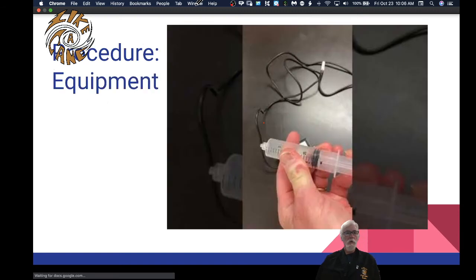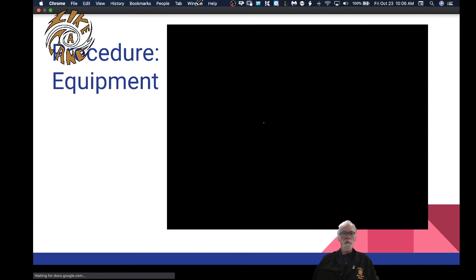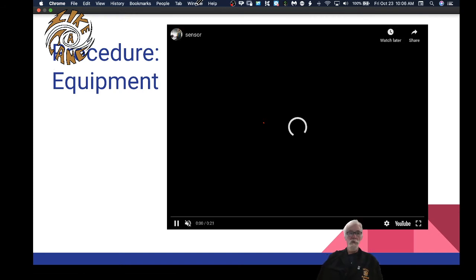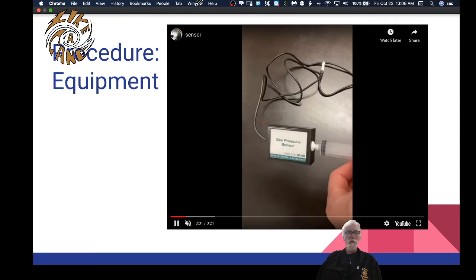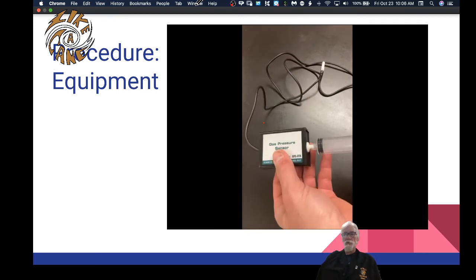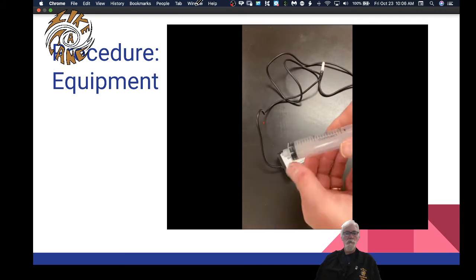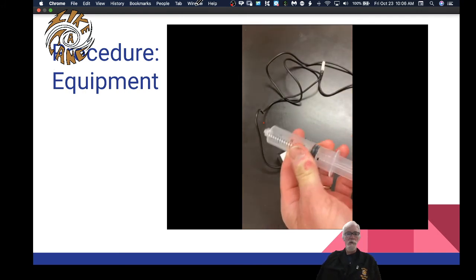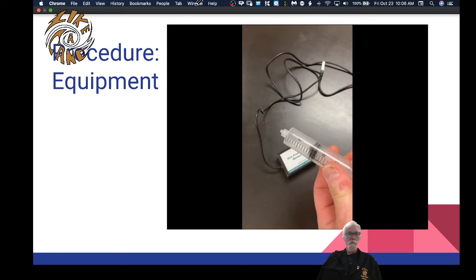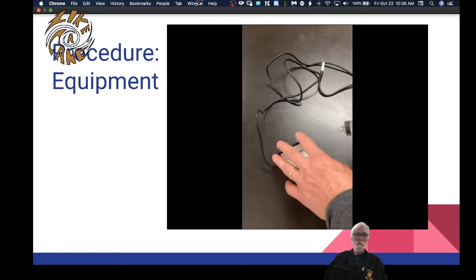We're going to be using a pressure sensor that can be read by a computer with the help of a special laboratory interface. The container we're going to use for our gas will be a plastic syringe, like the kind medical people use to inject drugs into people's arms. Ours won't have a needle on it though. Instead, it will attach directly to the pressure sensor. The gas we'll be using is the easiest gas to find, air.